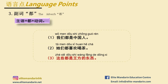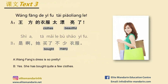The adverb 都 means both or all. The people or objects included are put before 都. For example: 我们都是中国人 — We are all Chinese. 他们都喜欢喝茶 — They all like drinking tea. 这些都是王芳的东西 — All these are Wang Fang's things.